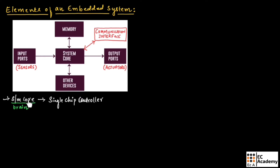The system core can also be an application-specific integrated circuit, or an application-specific standard product which is ASSP. So the system core can be a microprocessor, microcontroller, field programmable gate array, DSP, application-specific integrated circuit, or application-specific standard product.